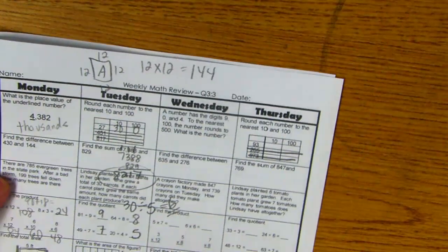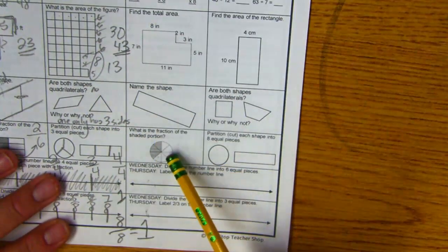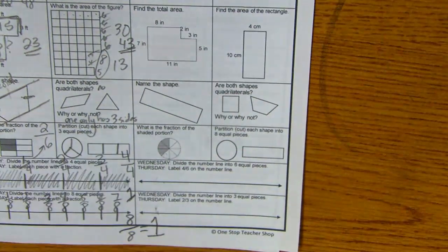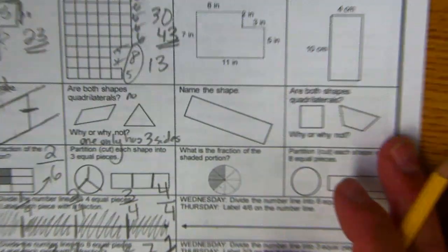Alright YouTube peeps, we are still on Q33. We are going to be looking at naming the shape, naming the fraction, and using a number line to make fractions. Okay, so let me zoom in here.